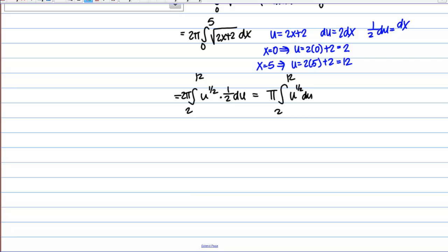So if I take the antiderivative of u to the 1 half, it's going to give me u to the 3 halves over 3 halves, still my pi out front, and I'm evaluating from 2 to 12. I can write that as 2 pi over 3 u to the 3 halves. And then I just need to plug in my bounds. So 2 pi over 3 out front, and then I'm going to have 12 to the 3 halves minus 2 to the 3 halves.